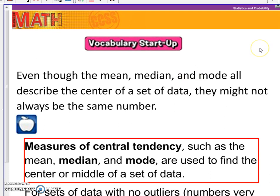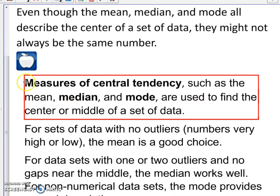So even though mean, median, mode all describe the center of a set of data, they may not always be the same number. So we have to memorize that the measures of central tendency are these three terms.